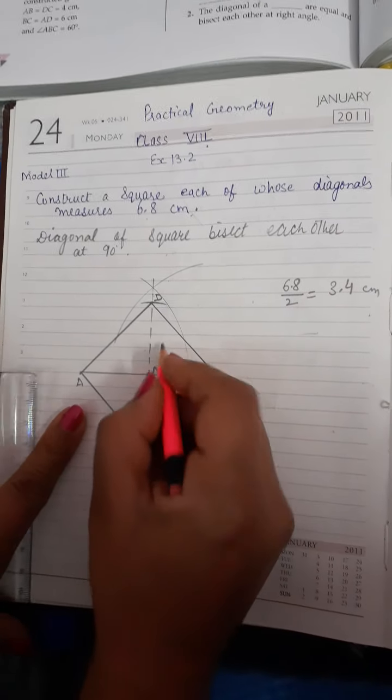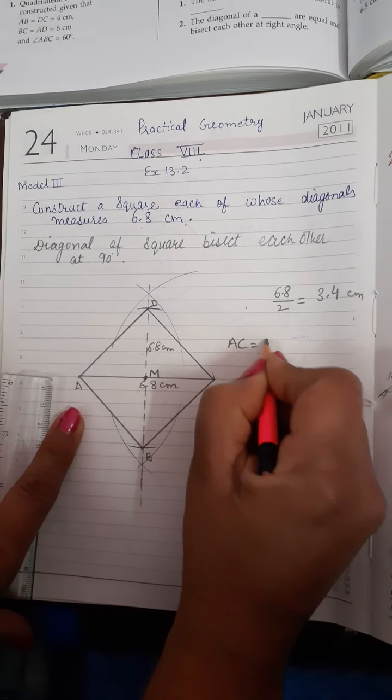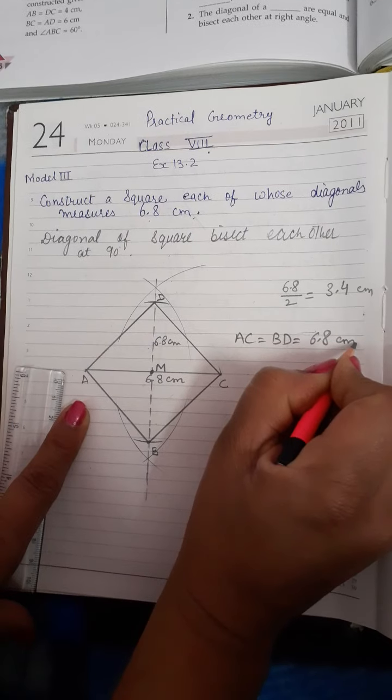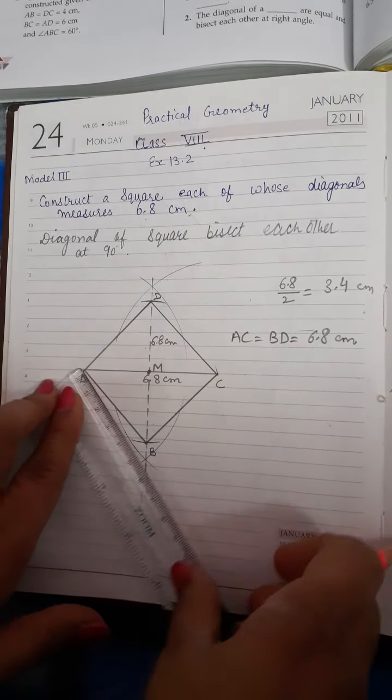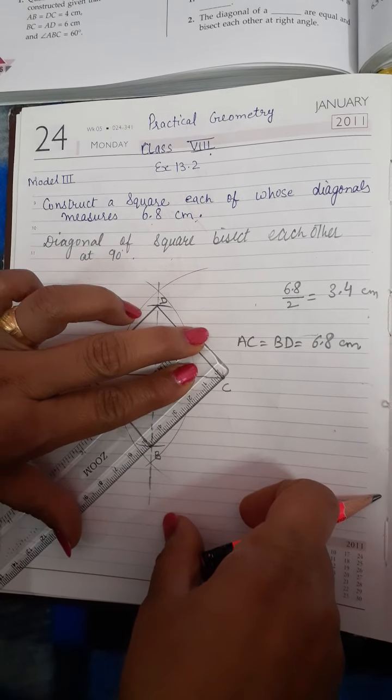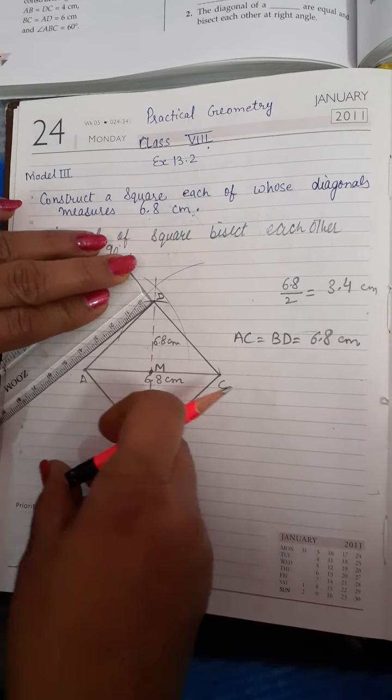So this is AC and BD. This is the length of both sides, it is 6.8 cm. And after measurement, you will see all the sides of square are equal. It is 4.7 cm. So this is your sides.